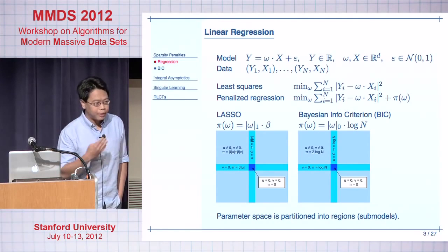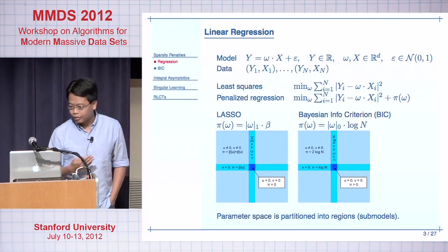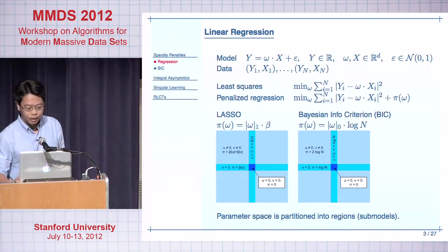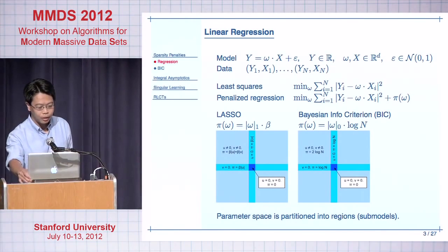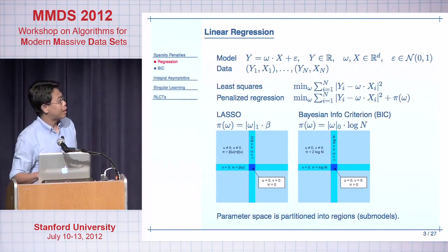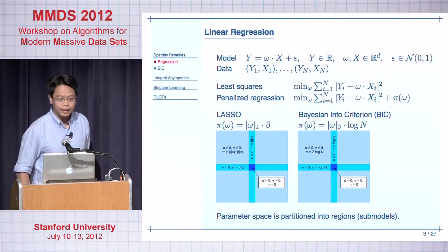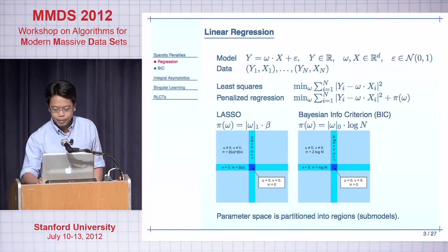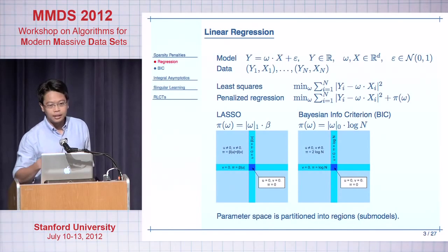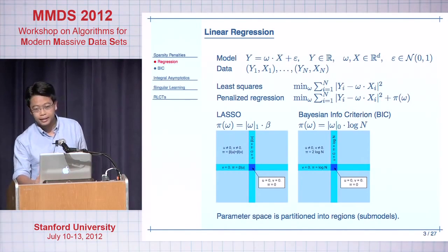Of course, it's very popular to study penalized regression where we add a penalty term pi of omega. A very famous example is Lasso, where the penalty would be the one-norm of omega times some penalty constant beta. Or if you look at the Bayesian information criterion, the BIC, the penalty would be the zero-norm — the number of non-zero terms in omega — times log of n, where n is the sample size.